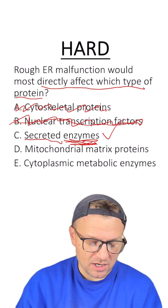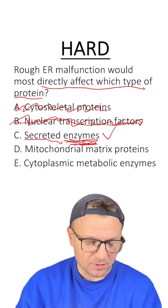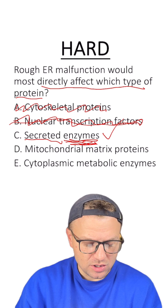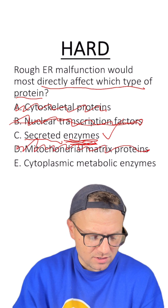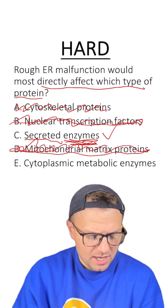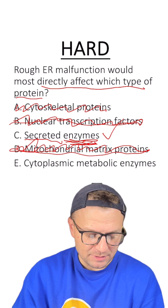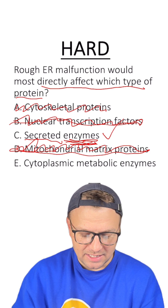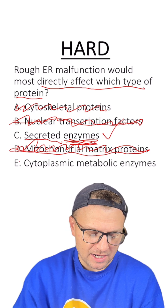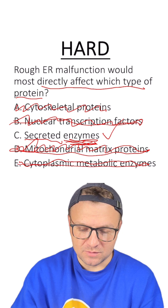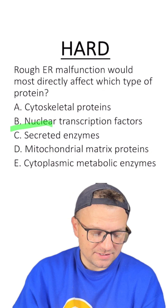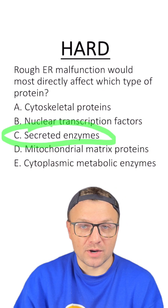Option D: mitochondrial matrix proteins? No, the rough ER doesn't make those. Option E: cytoplasmic metabolic enzymes? No, those are going to be made by free-floating ribosomes. This is why C is the right answer.